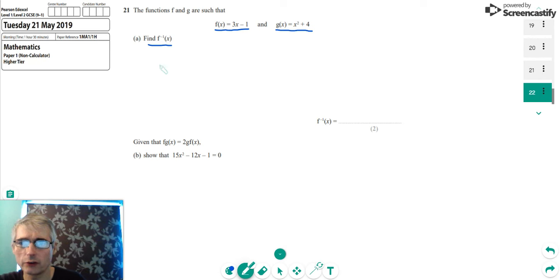So the easiest way to do this is if you say, in place of the f of x there, let y equal 3x minus 1.